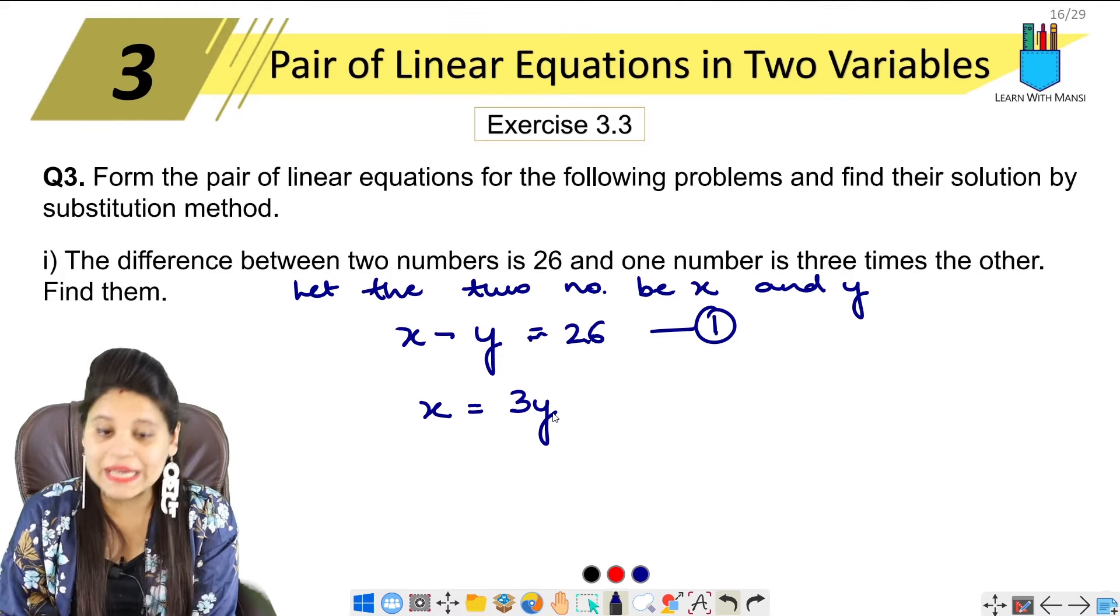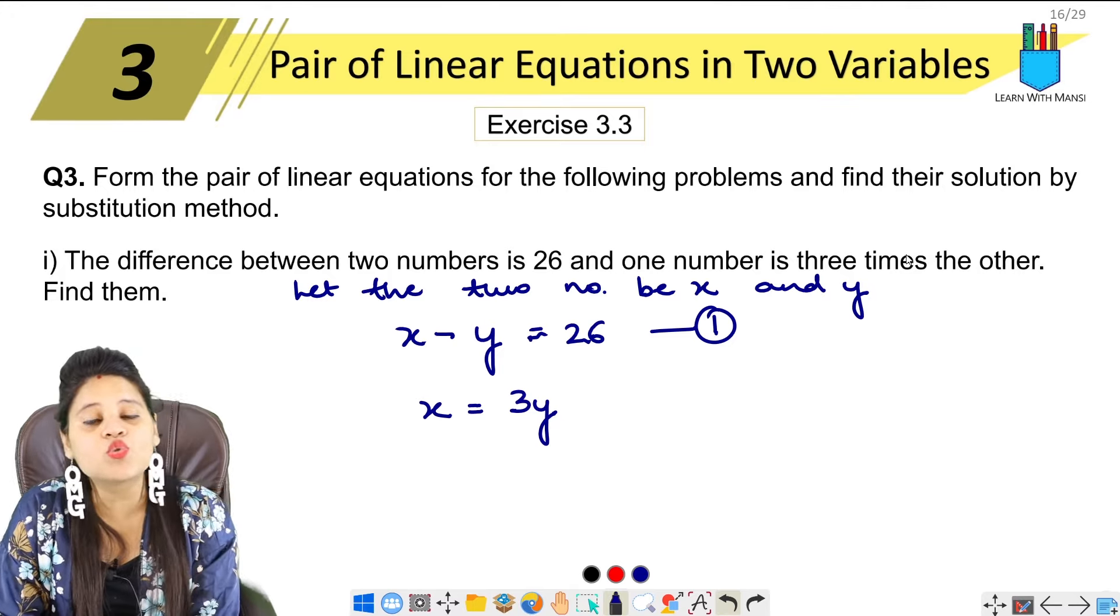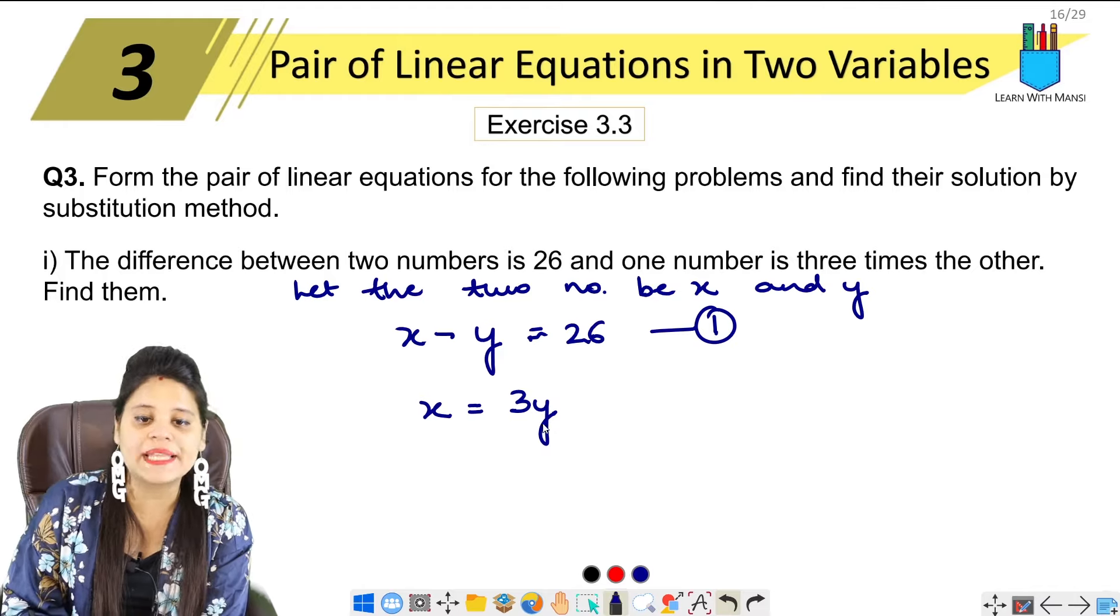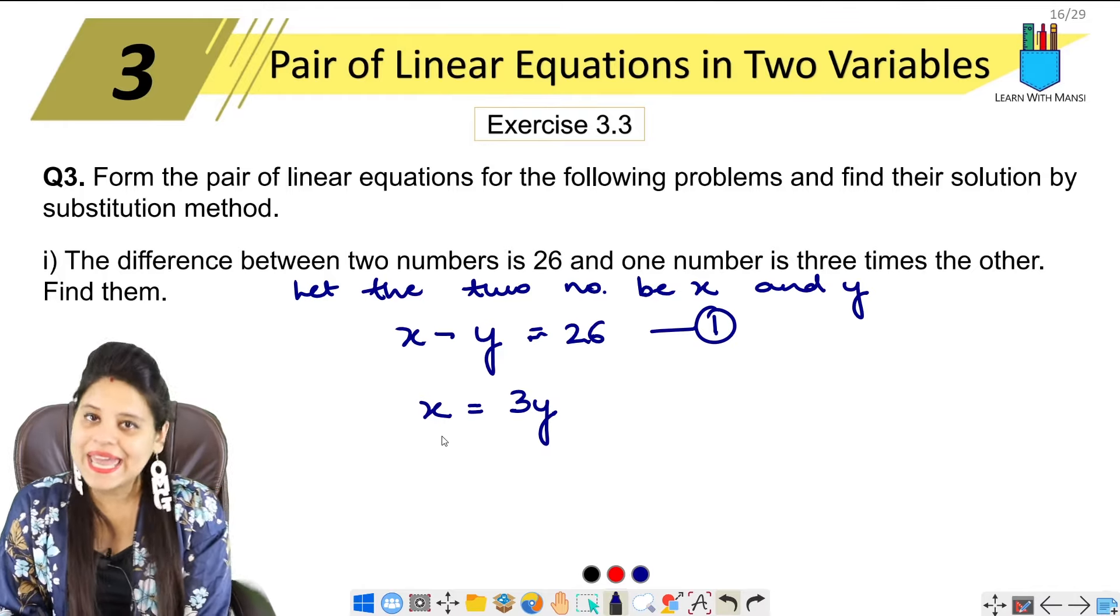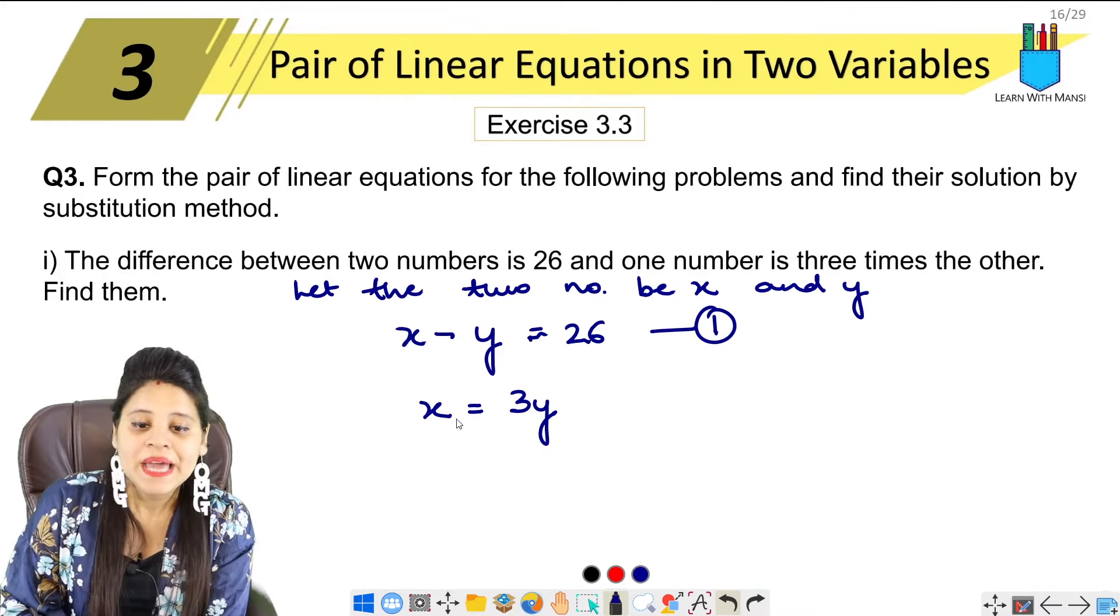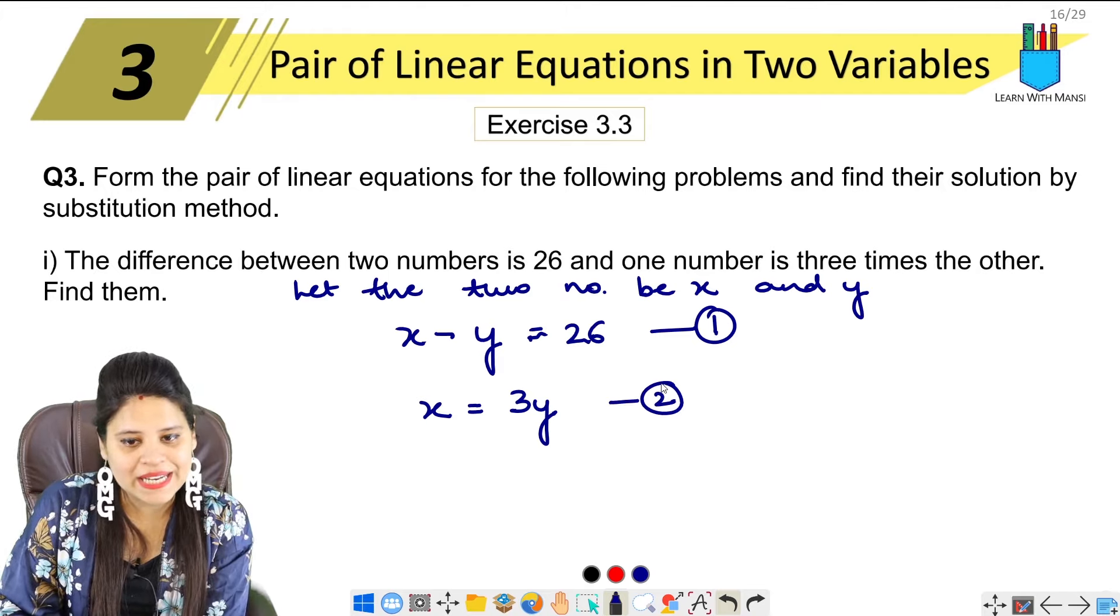Do you understand how it happened? x is one number which is three times the other number. So x equals 3y. This is my second equation.